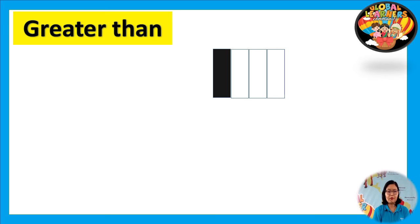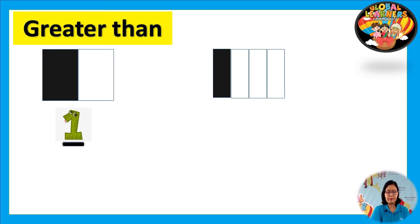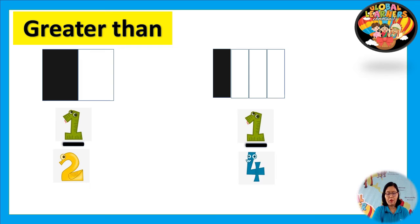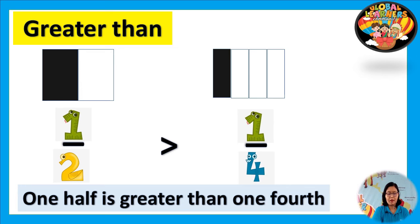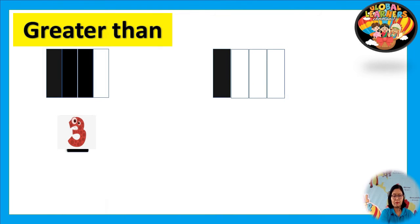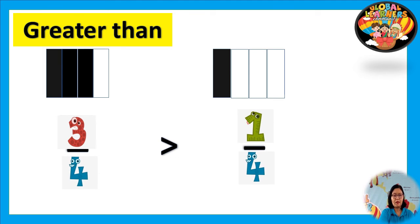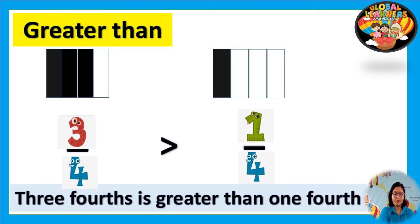Next we will learn about greater than. At the left side is one fourth and at the right side is one fourth — one fourth is equal to one fourth. Now we have three fourths at the left side and one fourth at the right side. Three fourths is greater than one fourth.